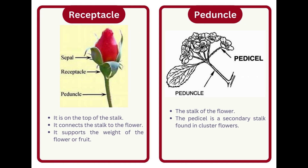Receptacle. It is on the top of the stalk. It connects the stalk to the flower and supports the weight of the flower or fruit. Peduncle. The stalk of the flower. The pedicel is a secondary stalk found in cluster flowers.